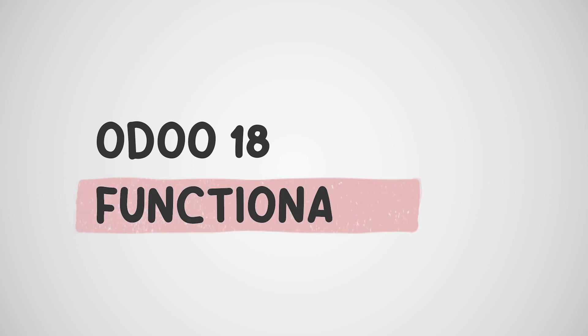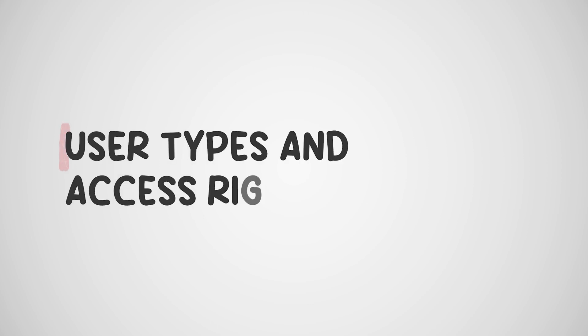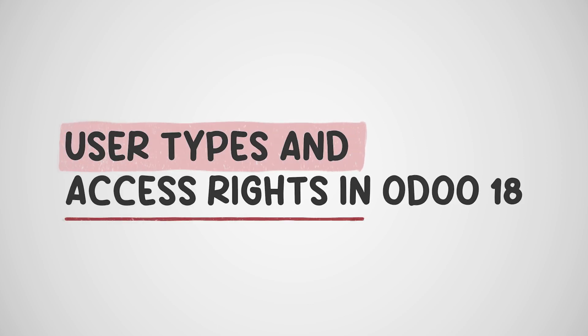Welcome back to Cybrosos. In today's video, we will discuss user types and access rights in Odoo 18 accounting. Access rights in Odoo 18 accounting refers to the permissions assigned to individual users or groups of users, determining what they can see, edit, and create within the accounting module. This granular control ensures data security and operational efficiency.